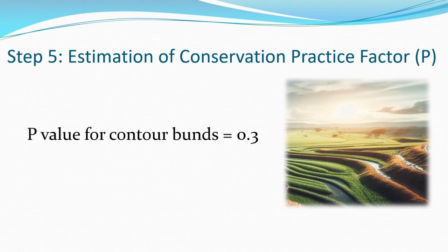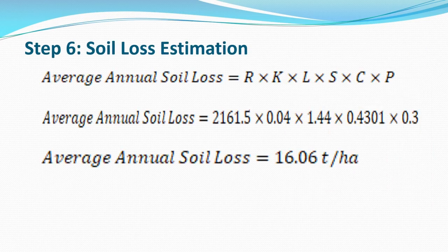Step 5: Estimation of Conservation Practice Factor P. For contour bunds, P = 0.30. Finally, substituting all values into A = R × K × LS × C × P and multiplying gives an average annual soil loss of 16.06 tons per hectare.